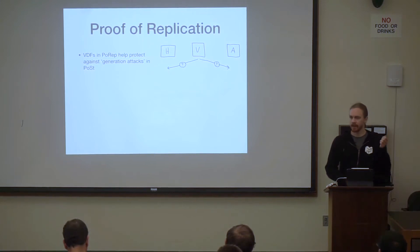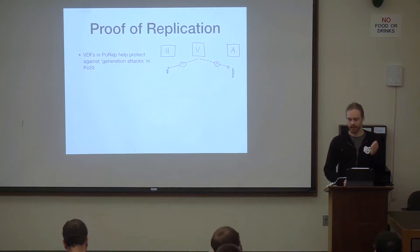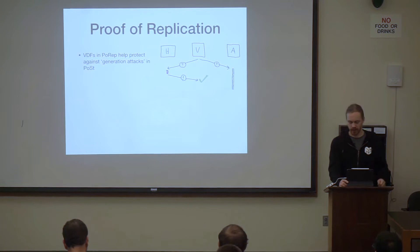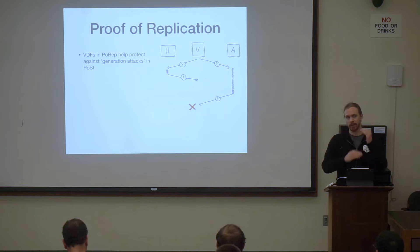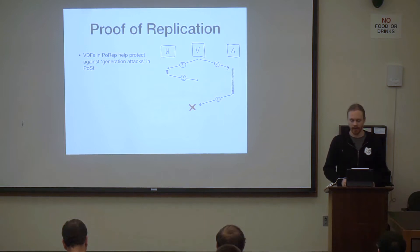So imagine you have an honest person and an attacker, and you have some verifier. The verifier sends a challenge to each person. The attacker doesn't have the data. So they haven't done the seal, they haven't made the replica, but the honest person has. So when they receive the challenge, the honest person can immediately process the challenge, while the attacker has to start doing this slow encoding operation. The honest person can respond immediately, while the attacker still has to continue doing this slow, effectively sequential operation. They finish, they can do the thing, they can send it back, and it's some very noticeable amount of time later, and they get caught.